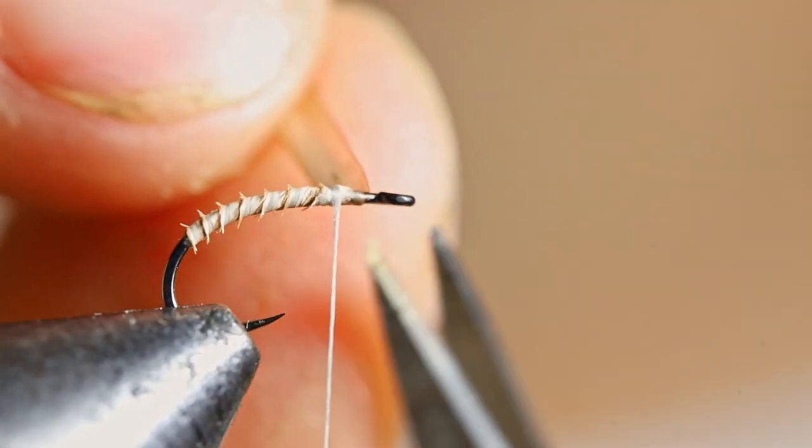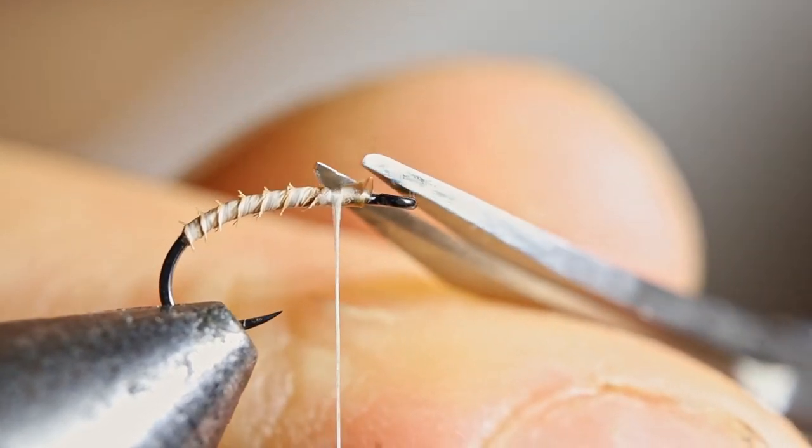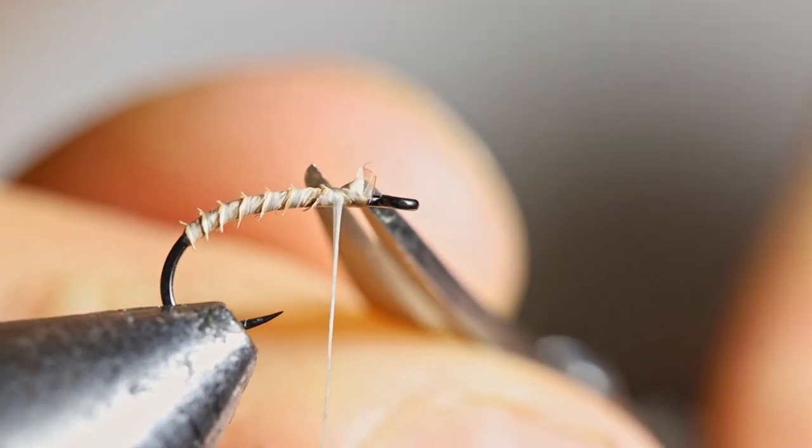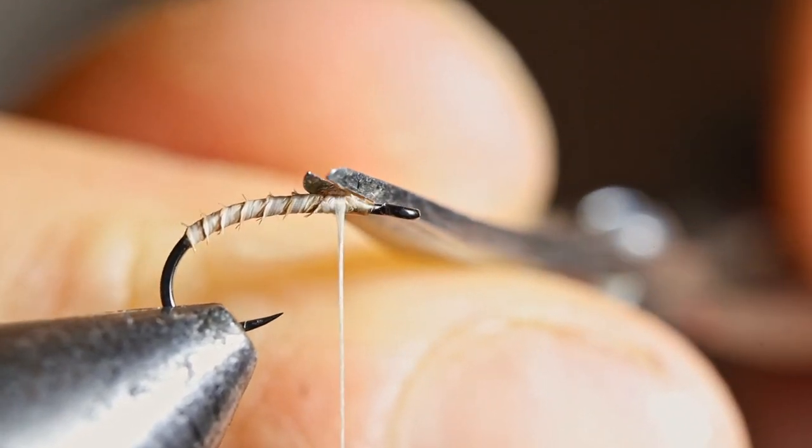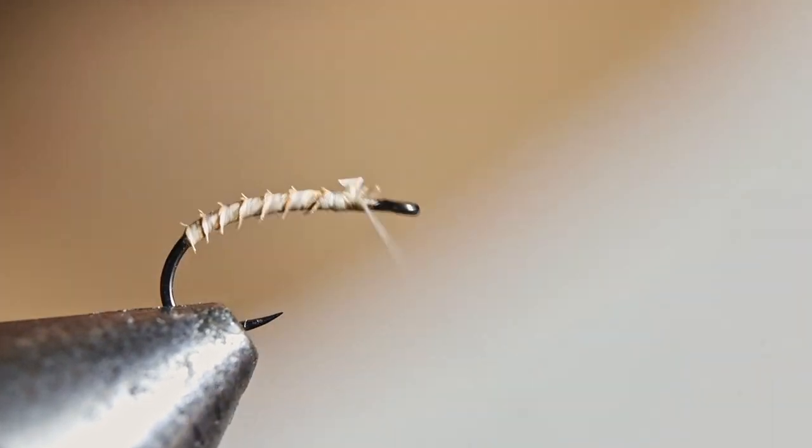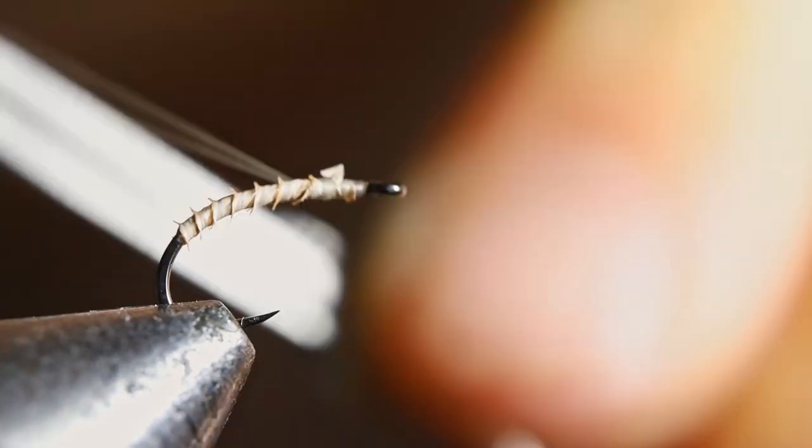Alright, so that's a really nice looking body. You want to cut this biot off as well as you can. Just sort of neaten it up with the thread. You don't want to add too much thread, but yeah.